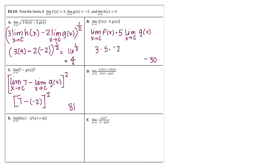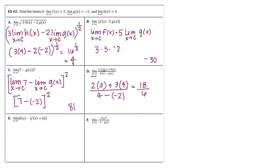For problem D, we divide up the numerator to get 2 times the limit as x approaches c of F of x, which is 3, plus 3 times the limit as x approaches c of H of x, which is 4, over the limit as x approaches c of H of x minus G of x, which is 4 minus negative 2. The numerator is 6 plus 12, which is 18, and the denominator is 6. So 18 divided by 6 is 3.